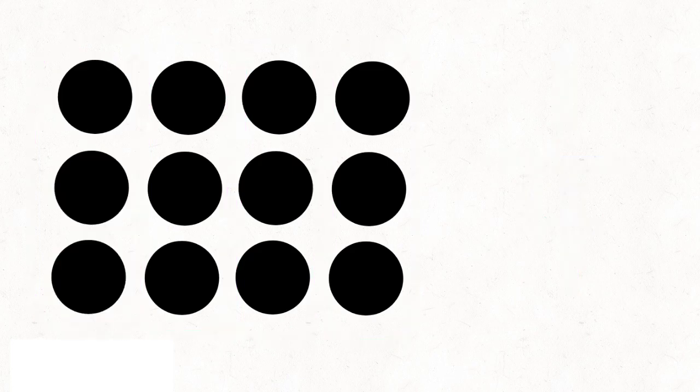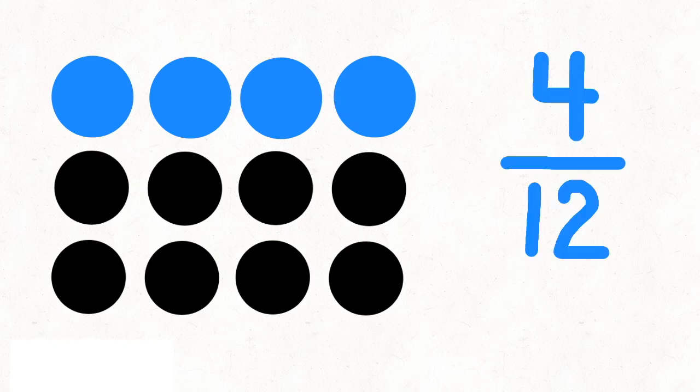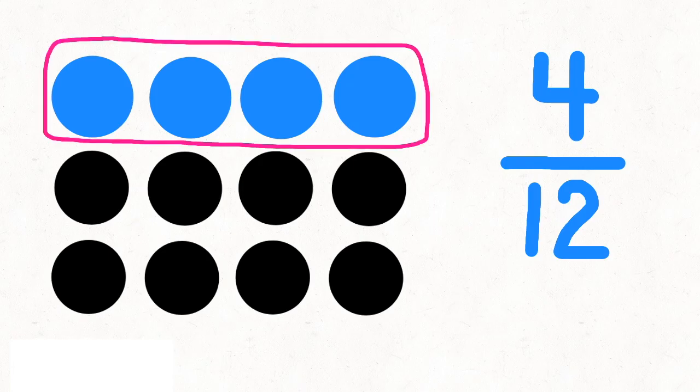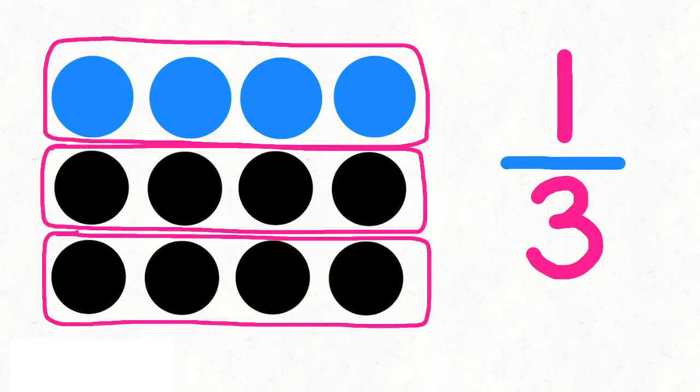This time, let's color 4 of the dots blue. That would be 4 twelfths, or 4 out of 12. If you look closely, you can see that there are three groups of 4 in 12, and I've colored one of those groups. So I've colored 1 out of 3, or 1 third of the dots. This shows you that 4 twelfths is equivalent to 1 third.